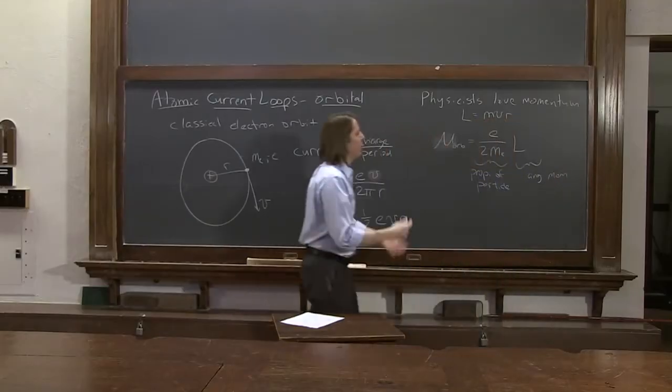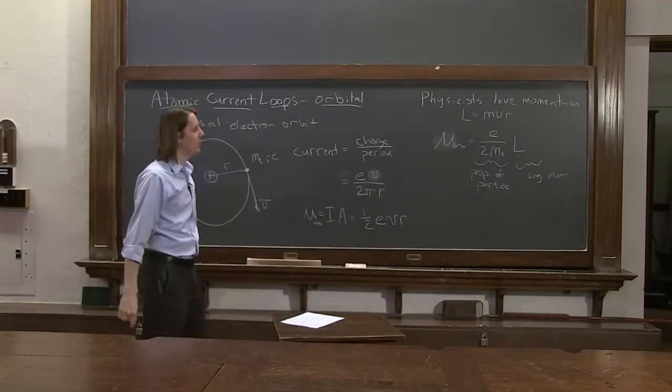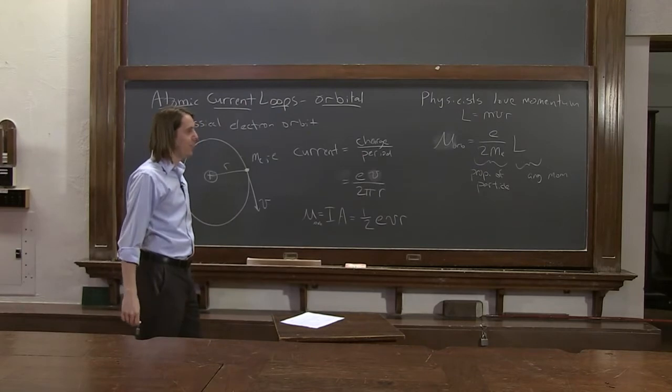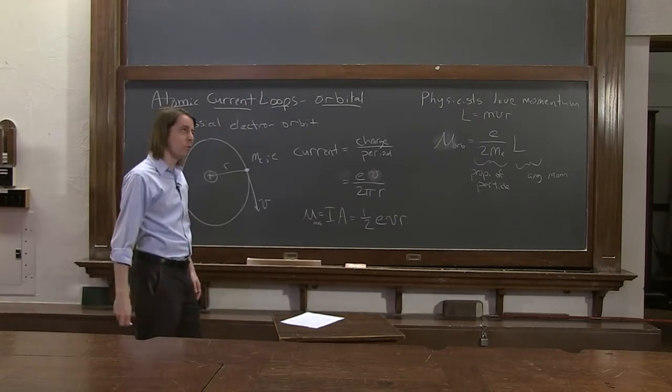So from this way of writing it, you can see any particle you have, you write something about its properties, and then you write its angular momentum, and then you're set with its orbital angular momentum.